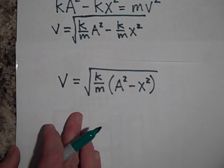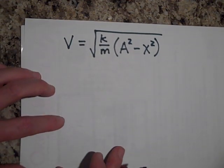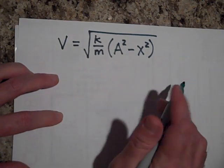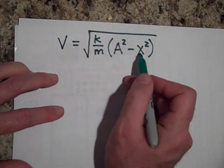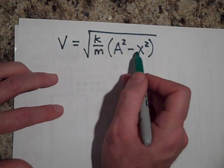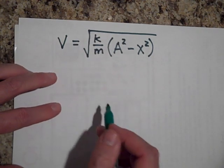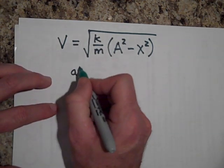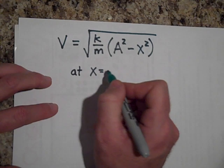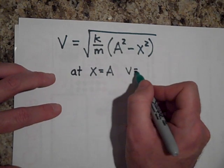Okay, so let's see how this works. If you want to know the speed at X equals A, let's find the speed when X equals A. When X equals A, it looks like this is going to be A squared minus A squared. That's zero. So V is zero at X equals A. And that makes sense. It's turning around there at X equals A, V equals zero.